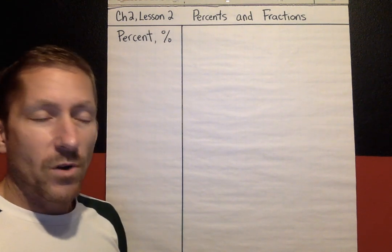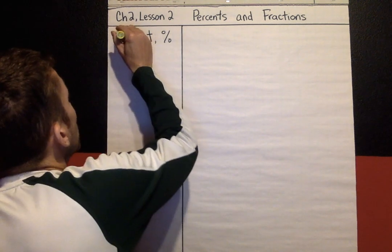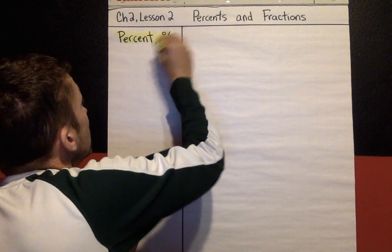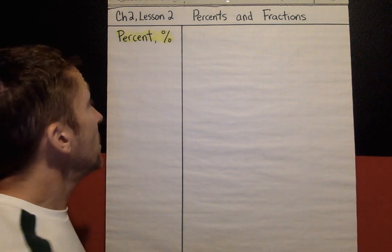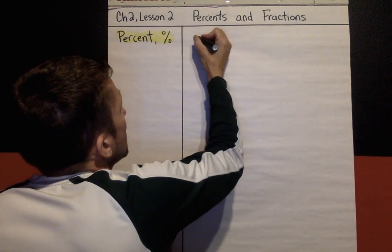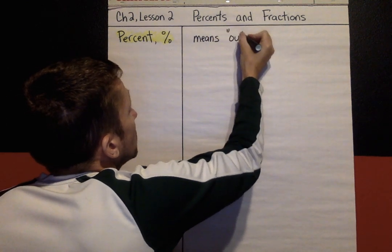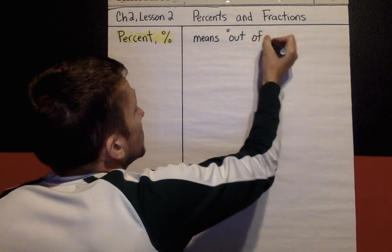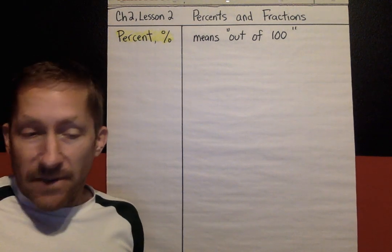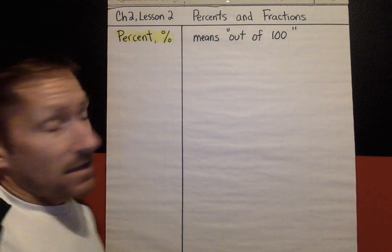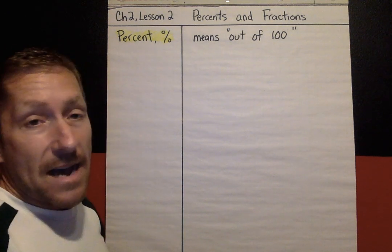The first keyword today is percent. So percent, when you see the word percent or when you see that symbol meaning percent, percent means out of a hundred. That's what it means every time, out of a hundred. It doesn't matter what the percent is, it always means out of a hundred.